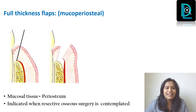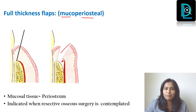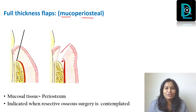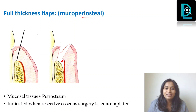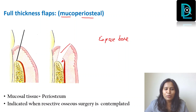Now let us look at the first one — the full thickness flap or mucoperiosteal flap. From the name itself, it is clear: muco and periosteal, which means it includes your mucosa and your periosteum. The red color tissue here is the periosteum. It is a thin layer of membrane covering your bone in a tight fashion, composed of blood vessels and nerves — it is rich with blood vessels. So if you need the periosteum to supply your graft for any grafting purpose, this is not the flap you are supposed to use. It is indicated when you need to expose the bone and do any surgery or corrections of the bone after raising the flap.